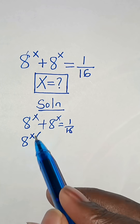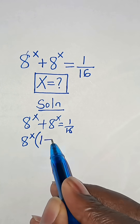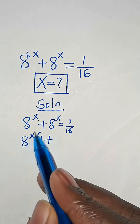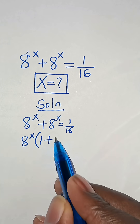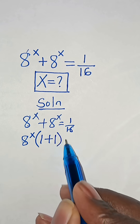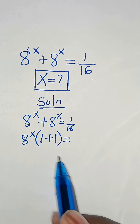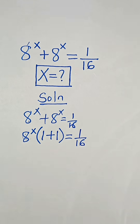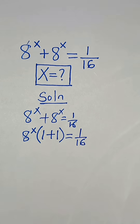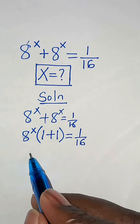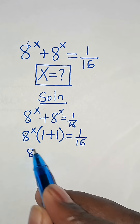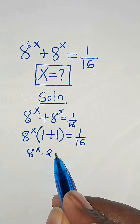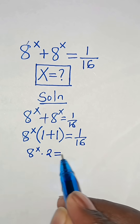8 to the power of x divided by 8 to the power of x is 1, plus 8 to the power of x divided by 8 to the power of x is 1, and this equals 1 over 16. So this gives us 8 to the power of x times 1 plus 1, which is 2, equal to 1 over 16.